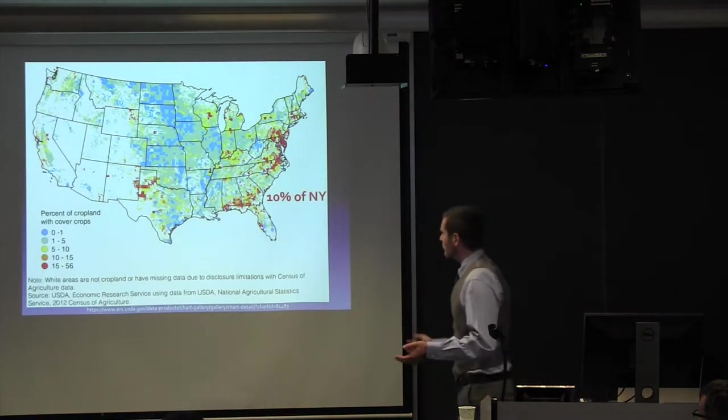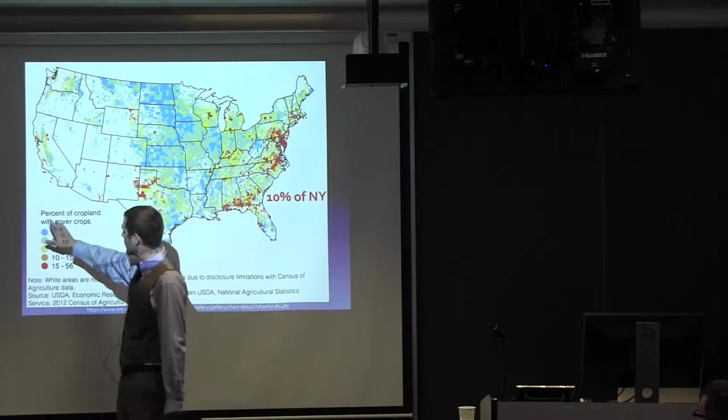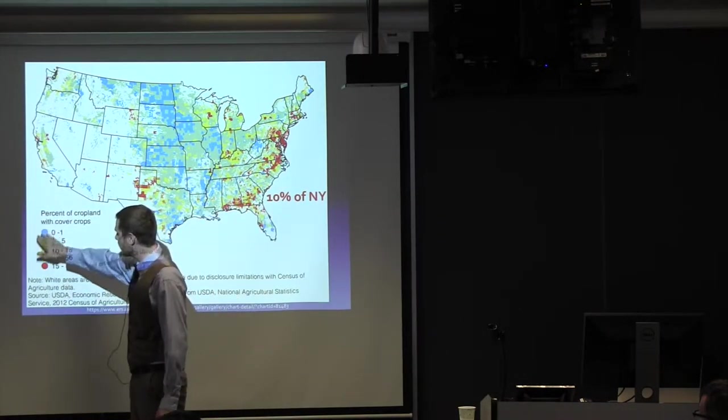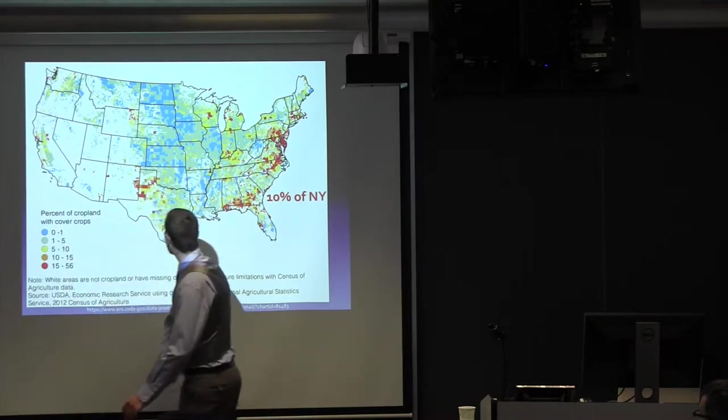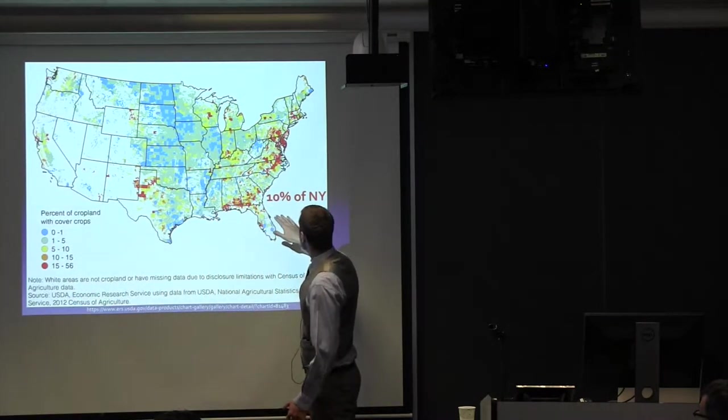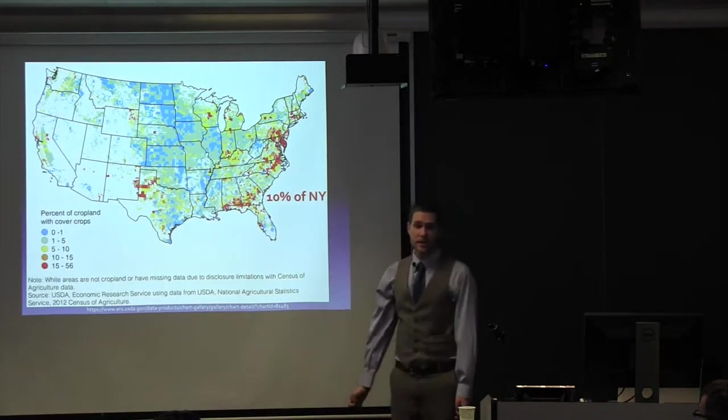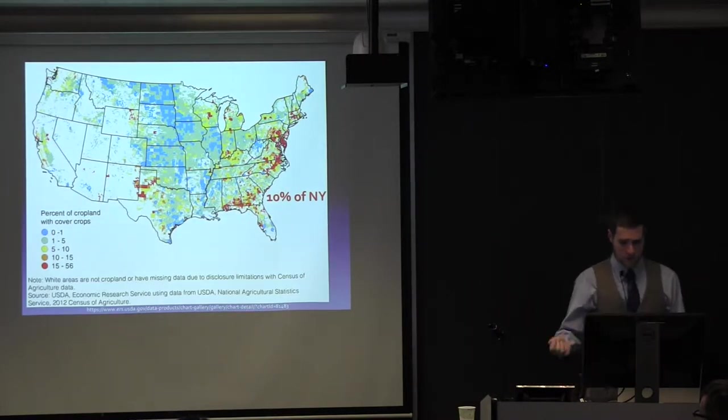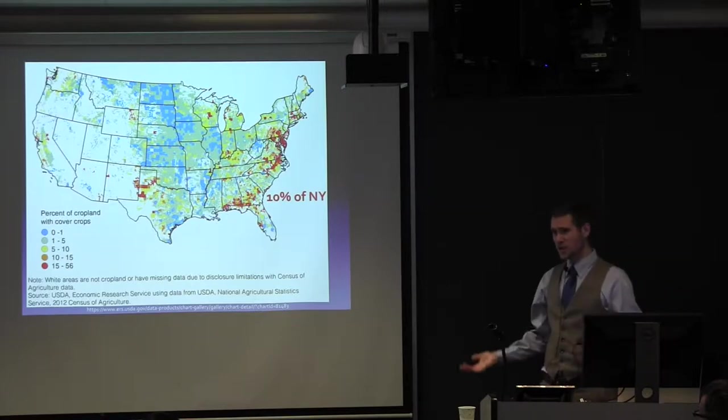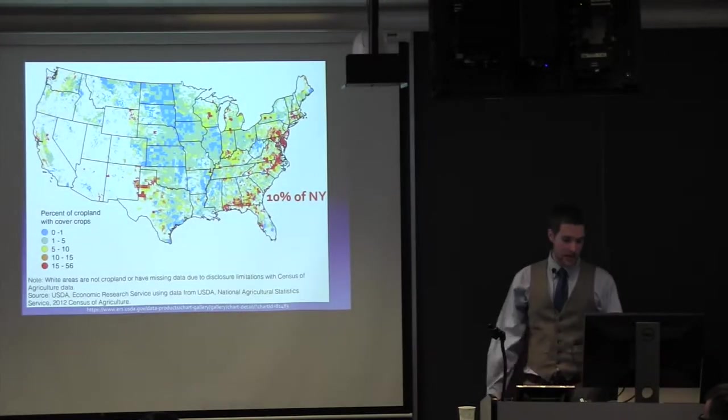So here's a map of the U.S. The cooler colors, this is percent of cropland with cover crops. The cooler colors, blues and greens, less cover crop being grown, the warmer colors is more. So New York is actually up here, not here. 10% of New York farmers, only 10% implement cover crops into their farming practices, which is weird. You'd think, if you have all these great services, why isn't everyone doing this?